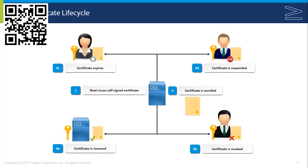A certificate can expire after a given length of time, which is established in the policy. And some CAs support a temporary suspension of a certificate in addition to permanent revocation. So once we start enrolling, these are the lifecycle elements that we can go through with individual certificates.